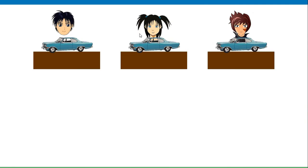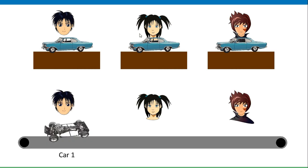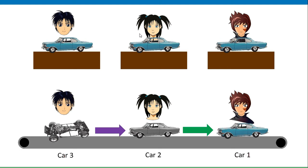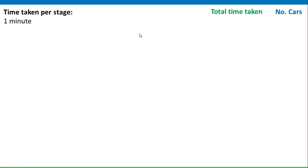Imagine a company that produces model cars with three employees. Each employee producing a complete car one at a time is actually inefficient. It would be better to put them on a production line: the first person makes the chassis, then passes it to the second person who puts on the body. While she's doing that, he immediately starts on the next chassis. The third person then paints the completed body, while the second person has already started on the next chassis.